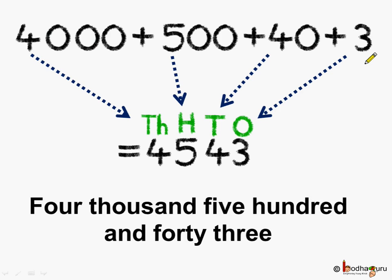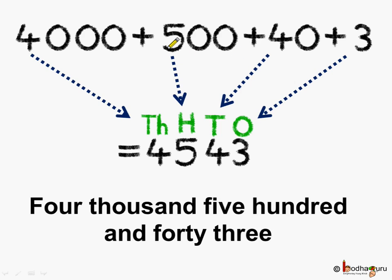Let's put it as 4000 plus 500 plus 40 plus 3. To convert into standard form, let us start from the lowest value. How many ones are there? There are 3 ones. How many tens are there? 4 tens are there. So let's put 4 at the tens place.